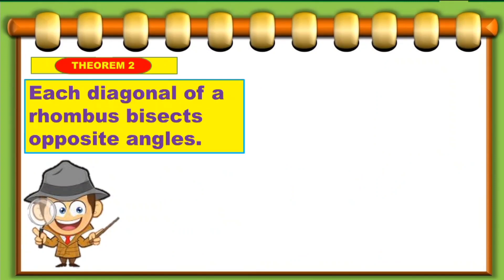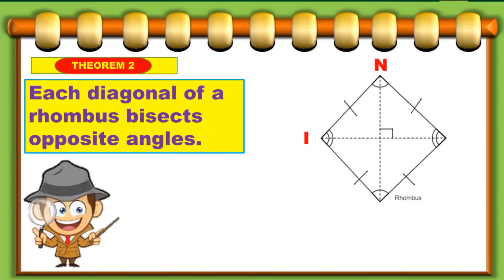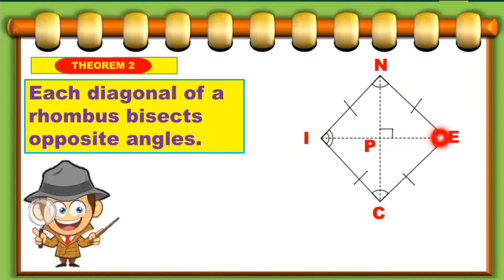Let's move on to theorem number 2, which states that each diagonal of a rhombus bisects the opposite angles. Now let's take a look at this illustration — we have rhombus NICE with diagonals segment NC and segment IE.